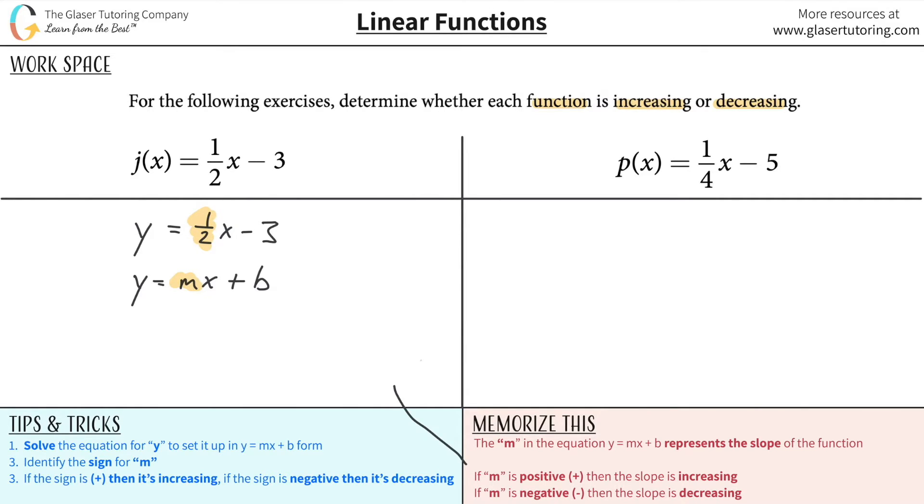And I have down here the rules. Positive means increasing and negative means decreasing. So this slope value is positive and therefore I can call it increasing.